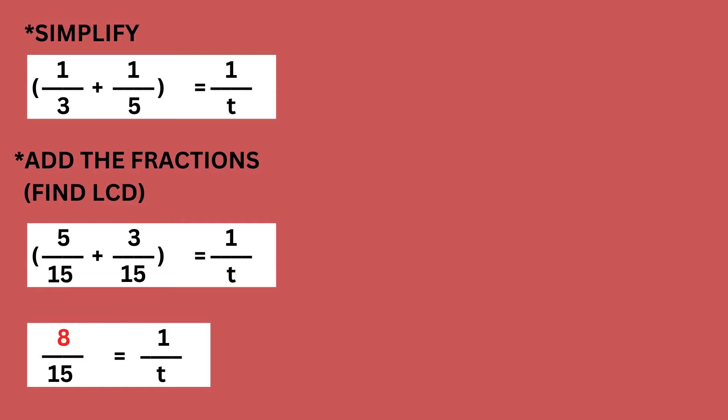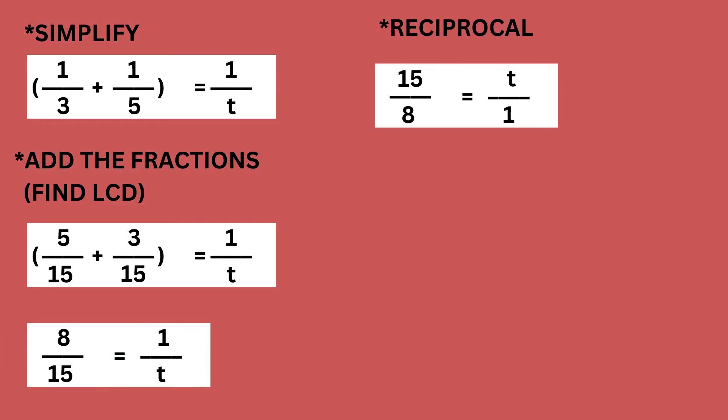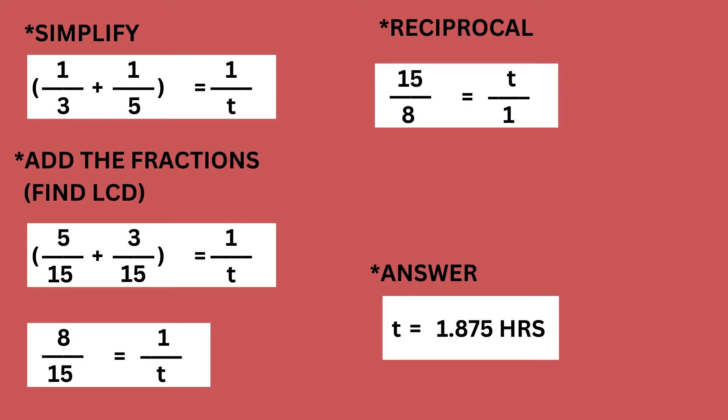After adding the fractions, time to get their reciprocal. To get the reciprocal, just interchange the bottom and top numbers. Hence, it will now be 15 over 8 equals to T over 1. Computing: 15 divided by 8 is 1.875. Hence, the answer is 1.875 hours.